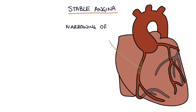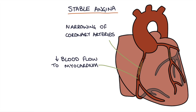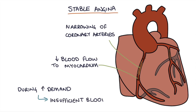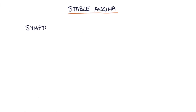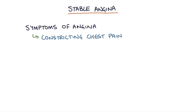Angina is caused by a narrowing of the coronary arteries that supply the heart with blood and oxygen, and this narrowing reduces the blood flow to the myocardium, which is the heart muscle. During times of high demand such as during exercise, there's insufficient supply of blood to meet the demand of the heart muscle, and this causes the typical symptoms of angina — a constricting chest pain that may or may not radiate to the jaw or to the arms.